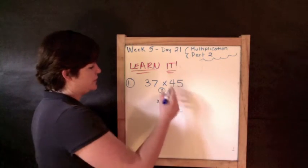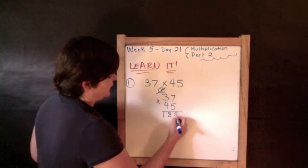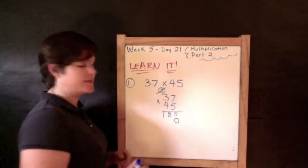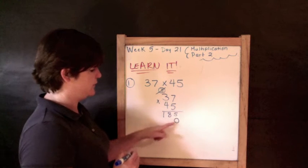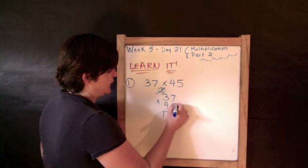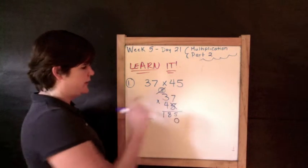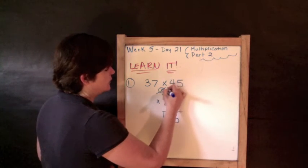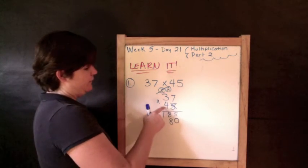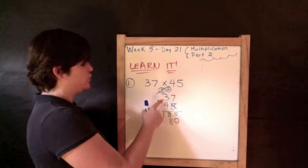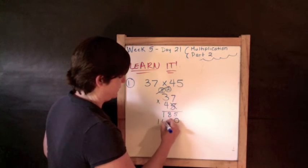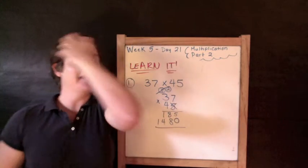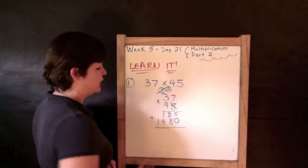We're going to cross out what we just regrouped, and then put a 0 to hold the place. So 185 is the first part of our product. Now we're going to do 4 times 7 and then 4 times 3. So 4 times 7 is 28 — put a 2 and circle it. 4 times 3 is 12, and 12 plus 2 is 14. So 185 is the first part of our product and 1,480 is the second part.